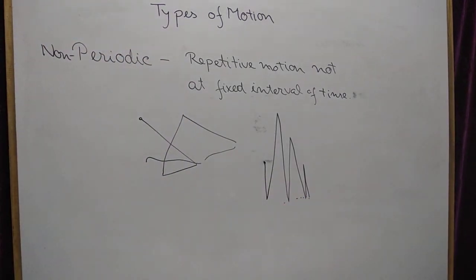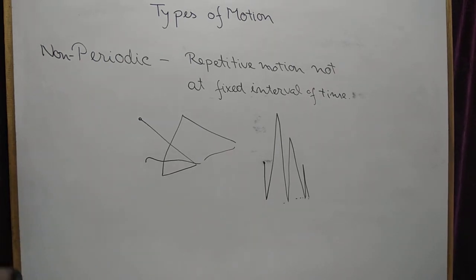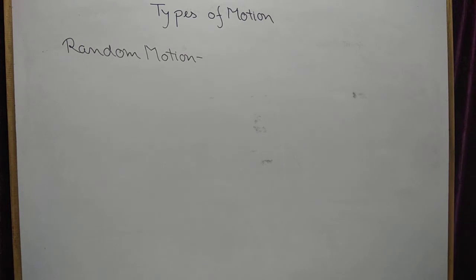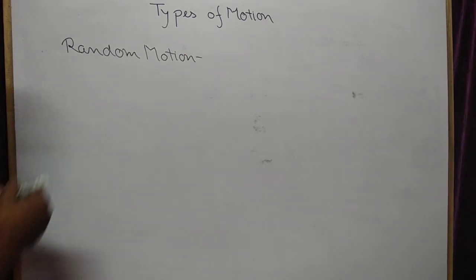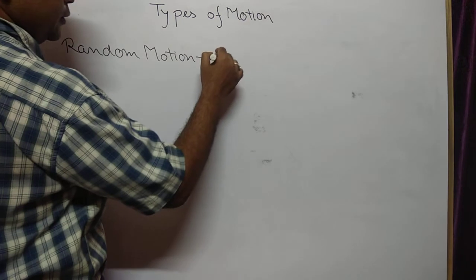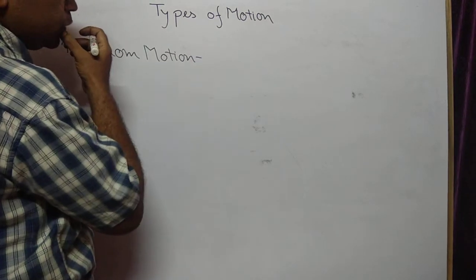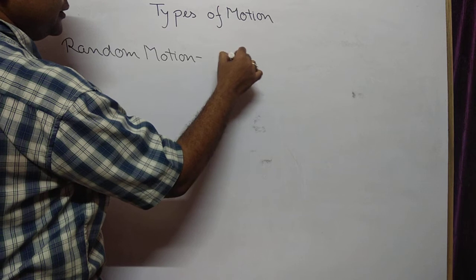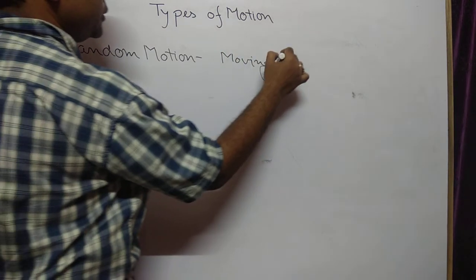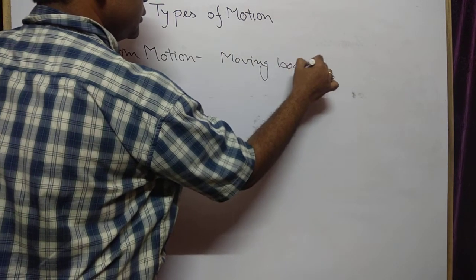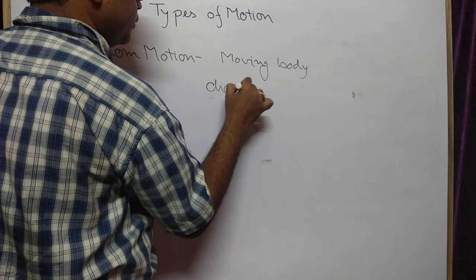Next is random motion, which is almost the same as non-periodic motion. But in random motion, the moving body changes its type of motion — the motion is not fixed and the body changes its motion with time.